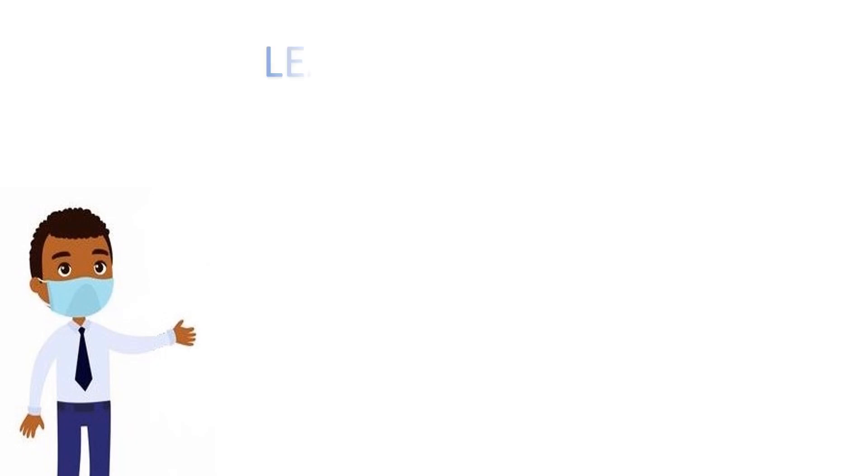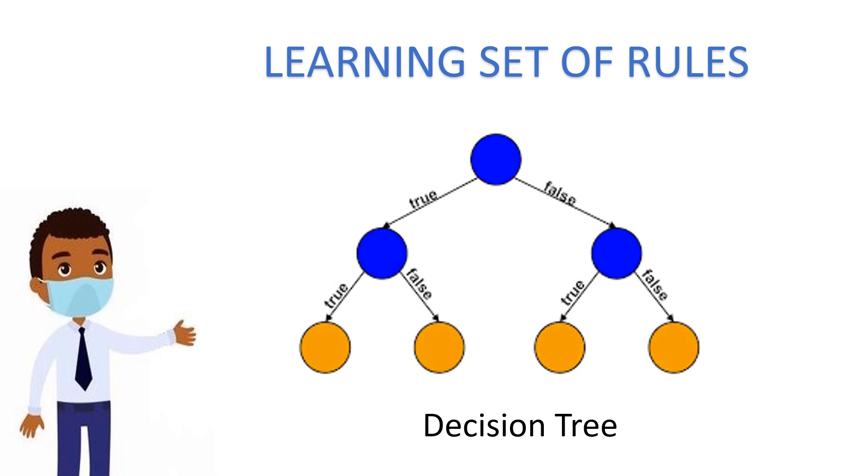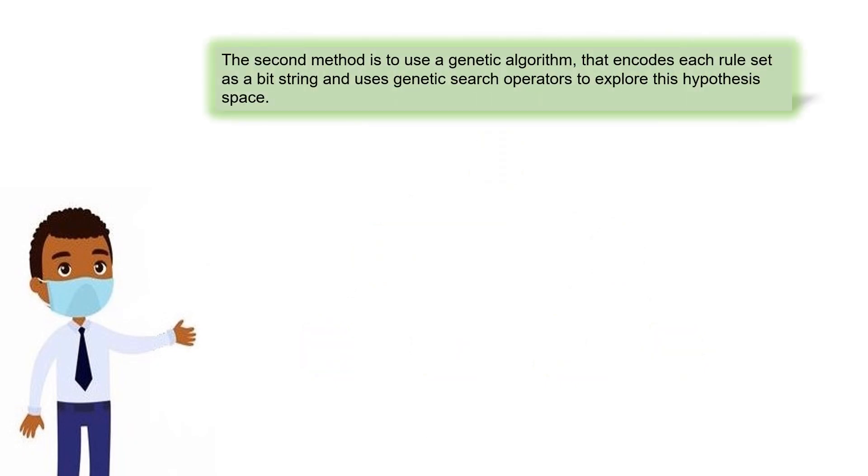The next topic is learning set of rules. One way to learn a set of rules is to first learn a decision tree, then translate the tree into an equivalent set of rules, such as one rule for each leaf node in the tree. The second method is to use a genetic algorithm that encodes each rule set as a bit string and uses genetic search operators to explore this hypothesis space.